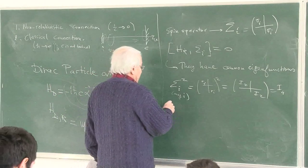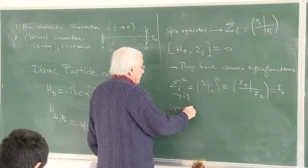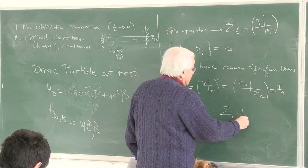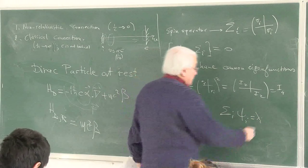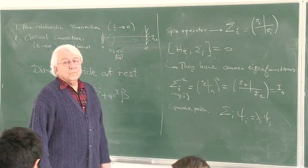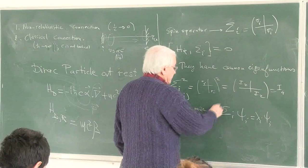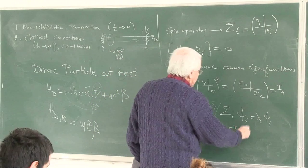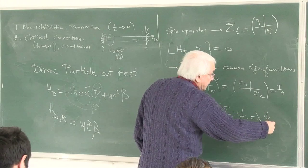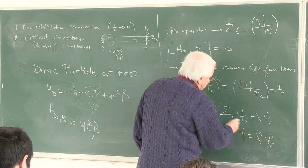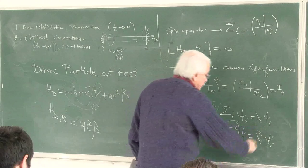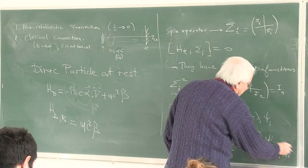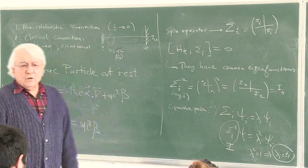Let me define the eigenvalue problem for this operator: sigma_i psi_i = lambda_i psi_i. If I multiply this by sigma_i again, the left-hand side is sigma_i squared psi_i, and the right-hand side is lambda_i times sigma_i psi_i, giving lambda_i squared psi_i. That is the identity, so lambda_i squared equals 1, meaning lambda_i equals plus or minus 1. So the sigma operator as defined here has eigenvalues plus and minus 1 always.